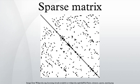The fraction of zero elements in a matrix is called the sparsity. Conceptually, sparsity corresponds to systems which are loosely coupled. Consider a line of balls connected by springs from one to the next; this is a sparse system as only adjacent balls are coupled.